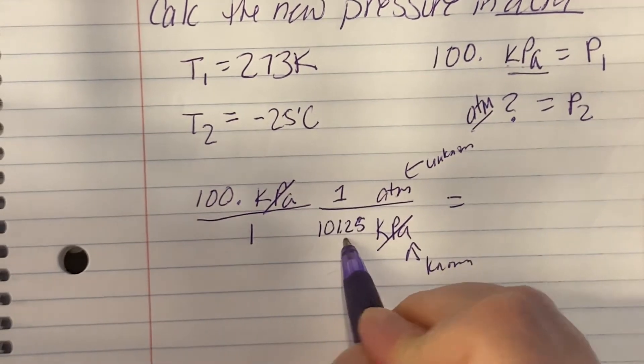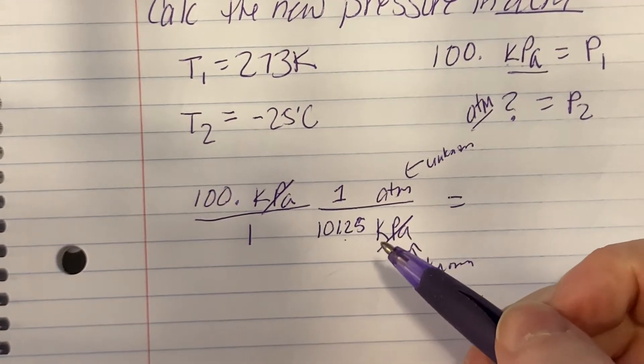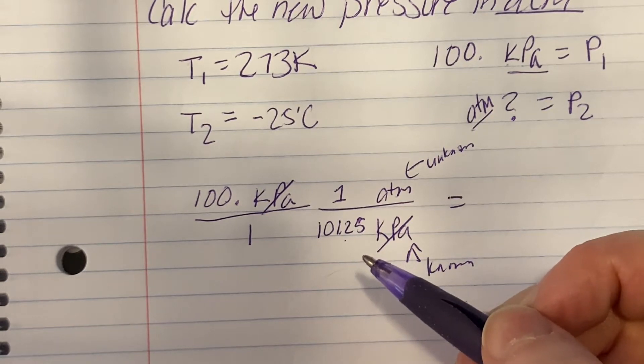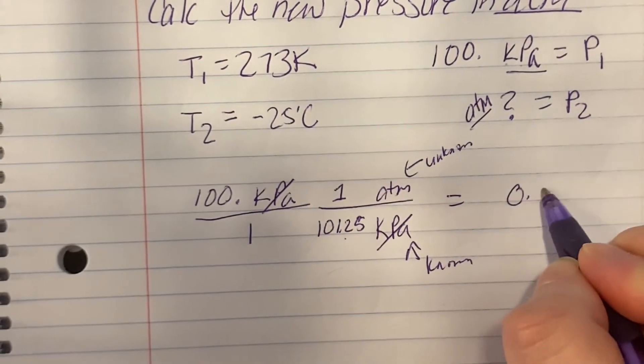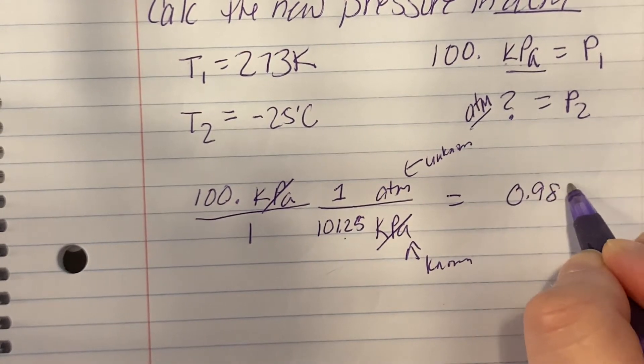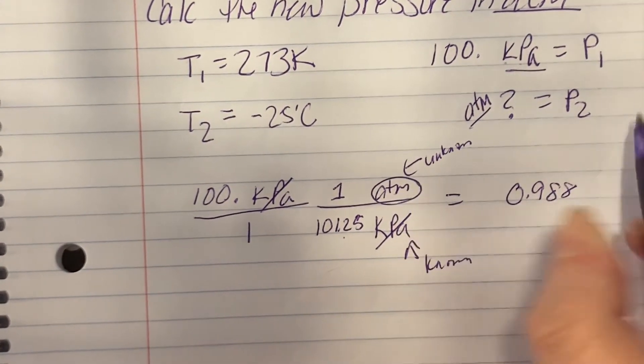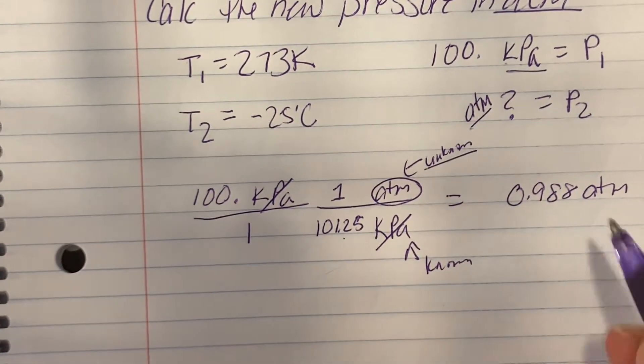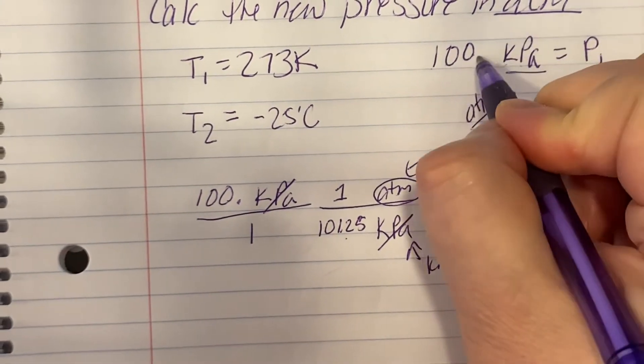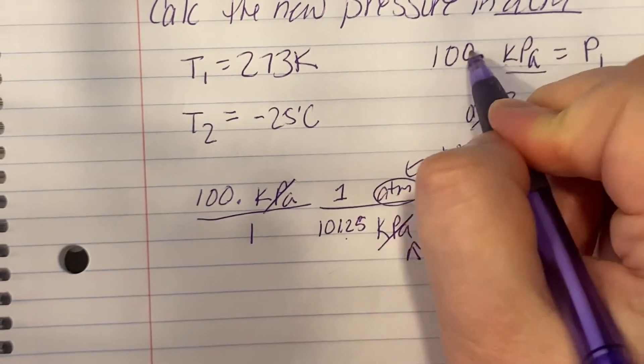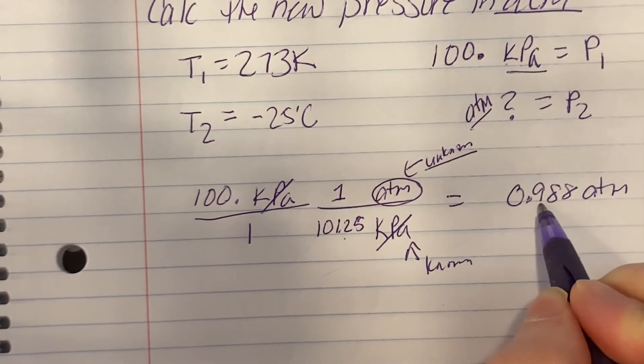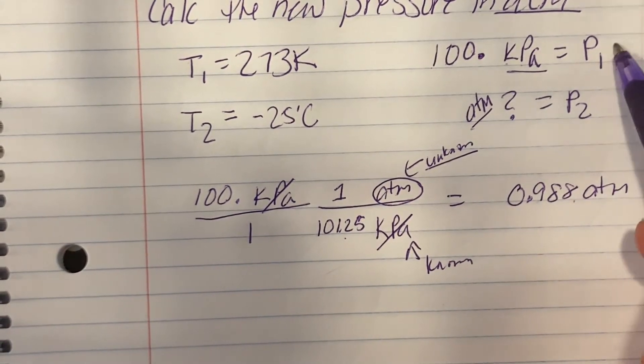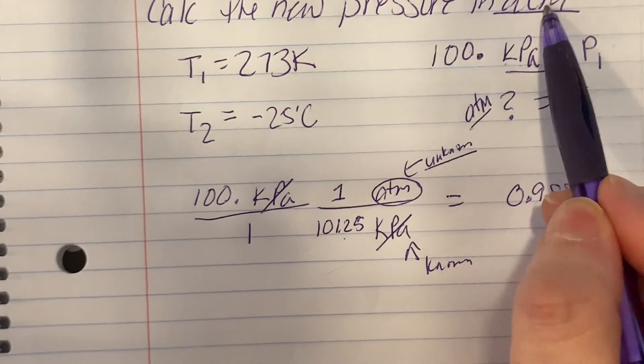I multiply across the top and divide across the bottom. So 100 times 1 divided by 101.25 gives me 0.988 atmospheres. My first pressure had 3 sig figs because it has a decimal, so the trailing 0 is important. This is just giving me my pressure 1, because my items have to match.